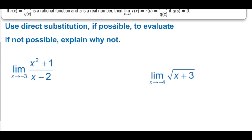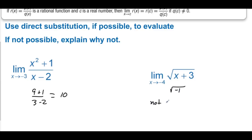Using direct substitution, if possible, to evaluate. The limit as x approaches negative 3 of the rational function gives 9 + 1 over 3 − 2, which is 10. The limit as x approaches negative 4 of the square root of x + 3 would require the square root of negative 1, so we say: not possible, because we'd have an imaginary solution.